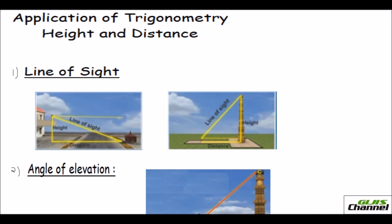Hello, Vasavi here. Let's see how trigonometry is used in real life — how we use trigonometry to find the height and distance of various objects without actually measuring them. Before going to the problems, let us learn the different kinds of angles and a few other things, so that it helps you in solving the problems easily.